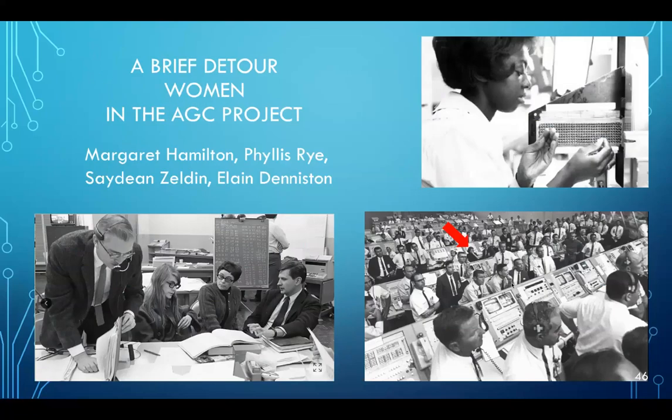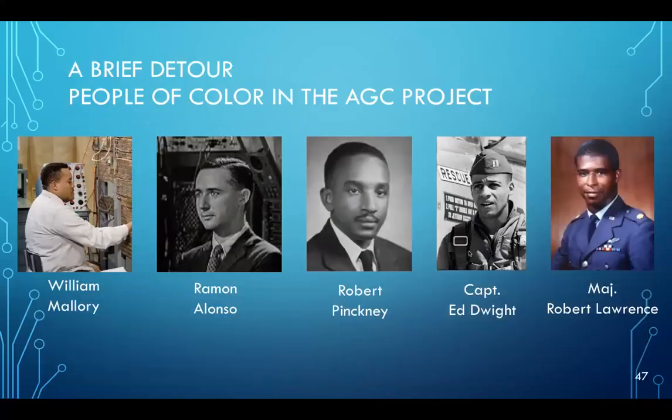On the Apollo Guidance Computer Project itself, there were a lot of women involved. Up here in the upper left, I mentioned already, they had an army of textile workers that actually helped manufacture the Apollo Guidance Computer rope cores. In terms of developing the software and supporting the whole effort, there were four women that I'm at least aware of now. Margaret Hamilton and Phyllis Rye, who are pictured here in a control room at NASA. Sadeen Zeldin and Elaine Denniston, I think, were also involved in software development and testing. This red arrow here points to the one and only woman that actually was allowed in the mission control room. Her name was Joanne Morgan. So also there were a number of people of color involved in the project. William Mallory was a test engineer that worked at MIT during the 60s. Ramon Alonzo was an immigrant from Argentina. His family immigrated to the US in the 30s. And he was one of the lead engineers on the AGC hardware architecture. Robert Pinckney was hired in the mid 60s to support software development at MIT. And then these two individuals, I'd never heard of them before, Captain Ed Dwight and Robert Lawrence were selected to become astronauts. Ed Dwight in 1963 and Robert Lawrence in 1967. Nonetheless, neither of them got their chance to become astronauts for different reasons.